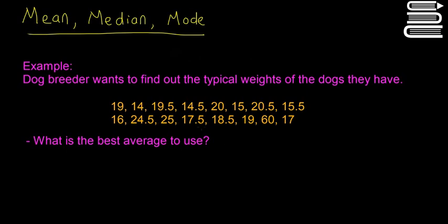Alright, so now in this video we're going to look at mean, median, and mode again, but we're going to do an example where we kind of have to use all three of them and see which one's best. Our example is we have a dog breeder and they want to find out the typical weights of the dogs they have. So here's all the weights in kilograms. There's about 16 of them and it's asking what is the best average to use.